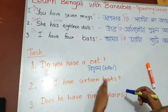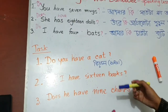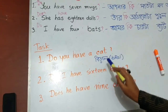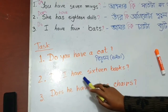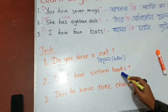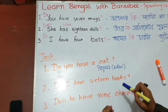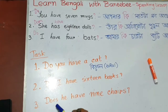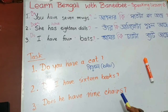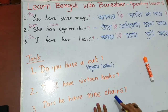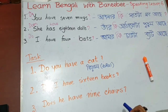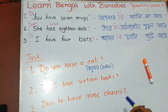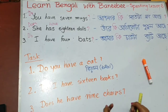Here is the task for you. There are three sentences you will have to translate into Bangla. First: do you have a cat? 'Biral' is the Bangla word for cat, so you will have to use this word. Second: do I have 16 books? You already know the Bangla word for book — that is 'boy'. You can take help from the previous lesson. Third: does he have nine chairs? The good news is we have the same word for chair — chair is chair in Bangla. I am very interested in seeing what is your version for chair — how will you write this English word with the Bangla letter. Try to write it.